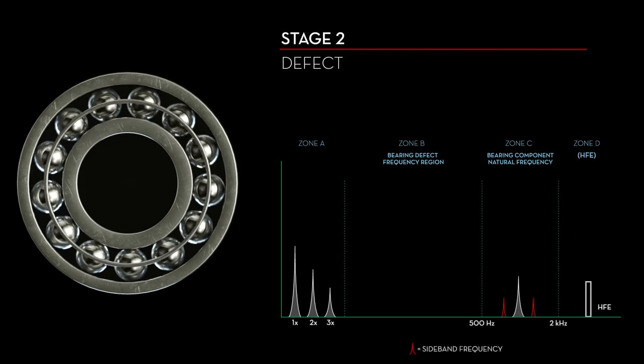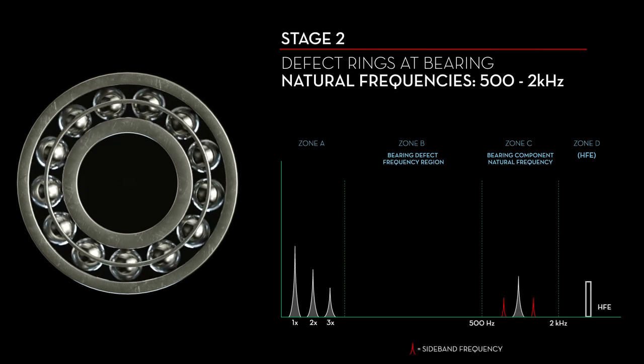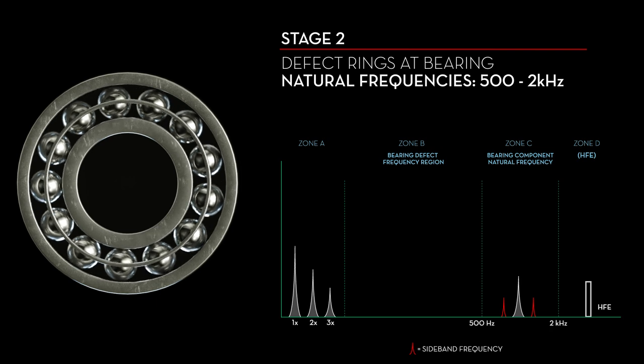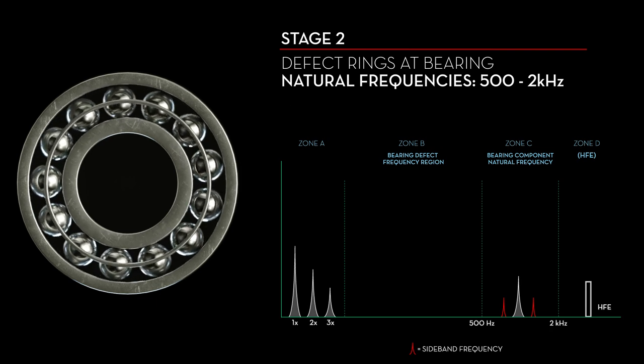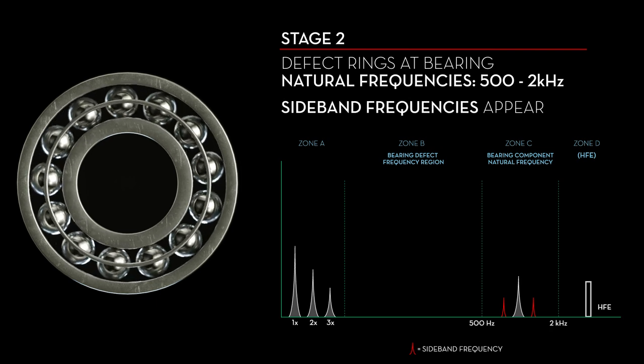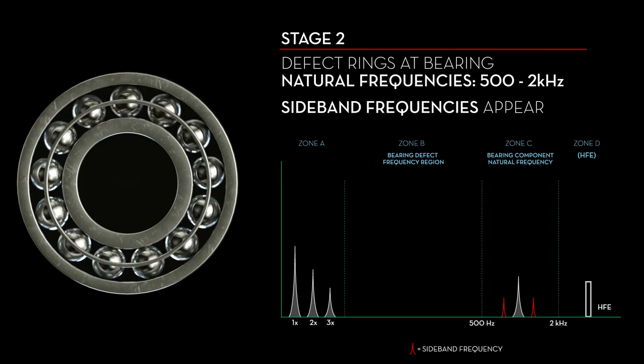In Stage 2, defects start to ring at the bearing's natural frequencies, typically between 500 and 2,000 Hz. Sideband frequencies also start to appear above and below these frequencies.